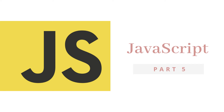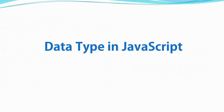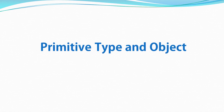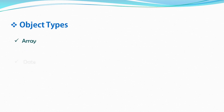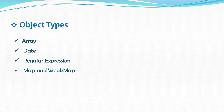Hey everyone, welcome back to the JavaScript tutorial. In this lecture we'll talk about object types in JavaScript. In the previous video we covered primitive data types. Now in this lecture we will cover object types. There are five types of objects: array, date, regular expressions, map and weak map, and set and weak set. We'll cover all five with their syntax.